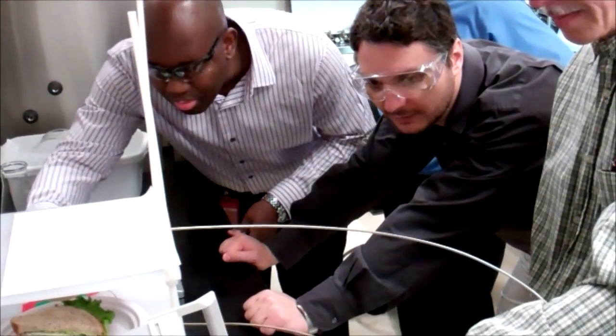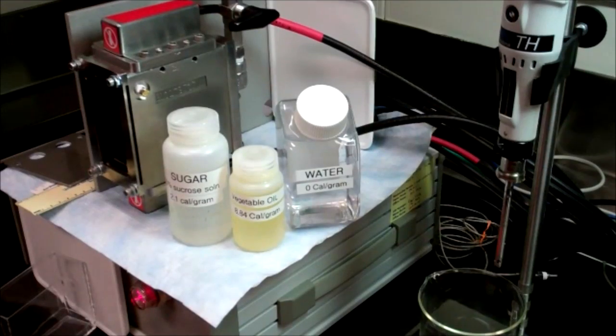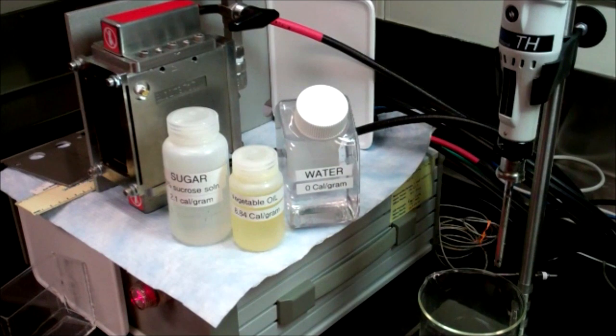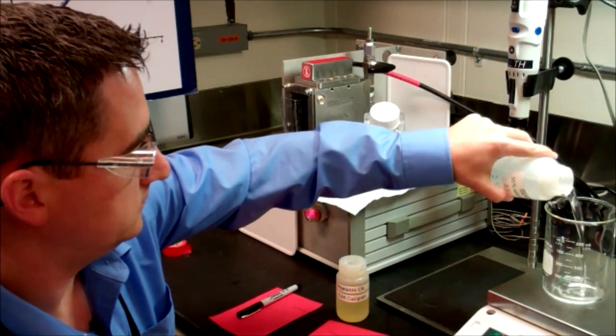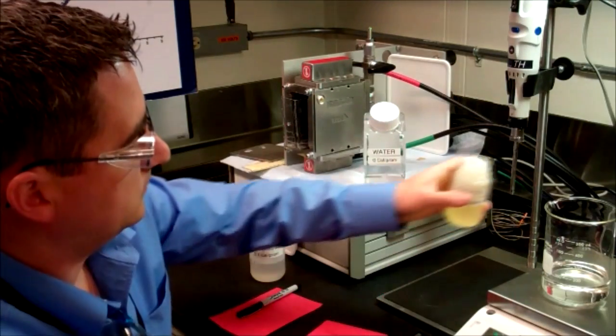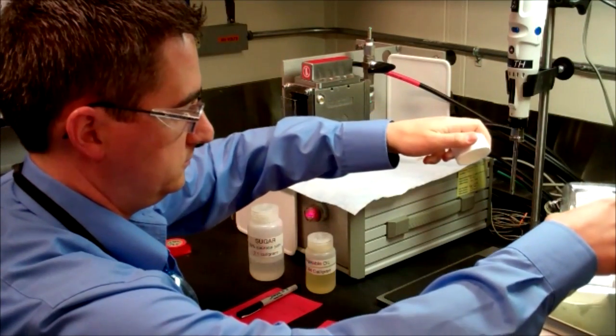It measures fat and water content to get to the total calorie count. The device assumes the rest of the food, whether it be protein, sugar, or carbs, has a predefined number of calories and lumps them all together. Biologist Matt Webster starts by weighing a sugar solution, vegetable oil, and water, then combines them to simulate an actual food item.